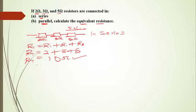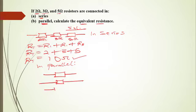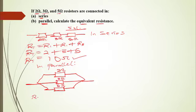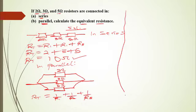For the parallel connection, draw the circuit diagram first — this helps in exams to show the examiner you understand the problem. The first branch is 2 ohms, the second is 3 ohms, and the third is 5 ohms. For parallel resistance: 1/RT = 1/R1 + 1/R2 + 1/R3, which becomes 1/RT = 1/2 + 1/3 + 1/5. We continue on the next part of the slide.